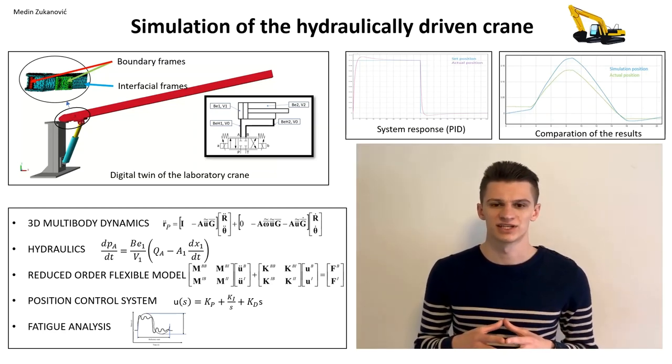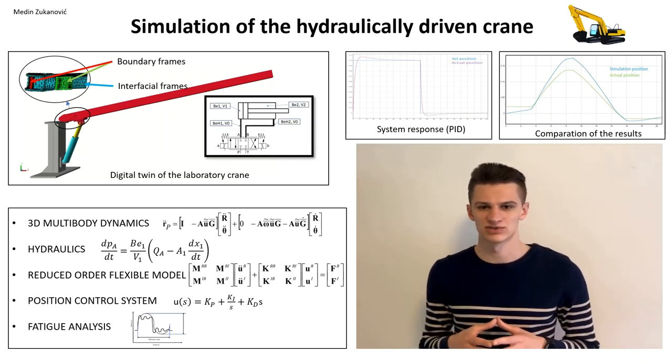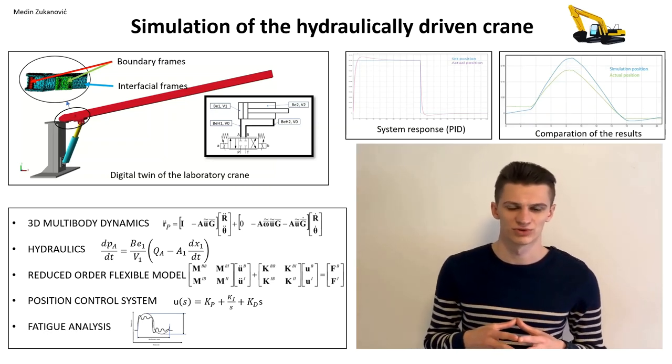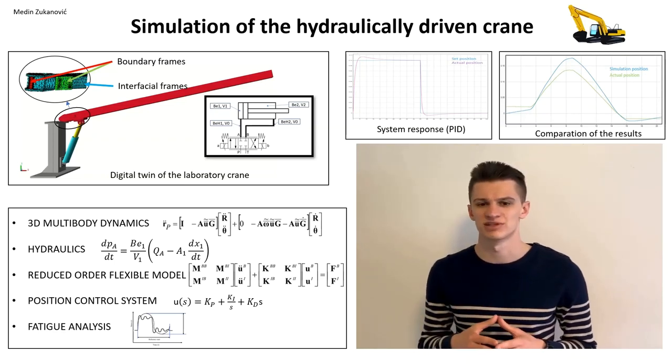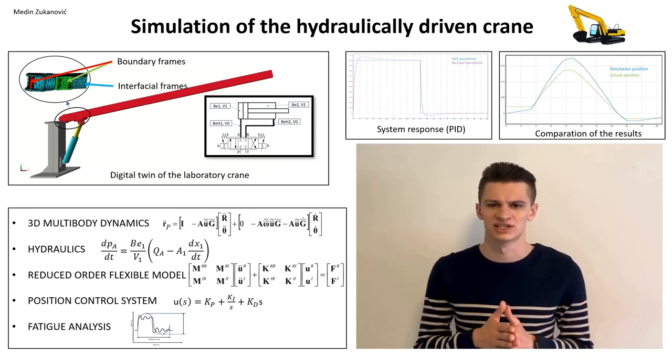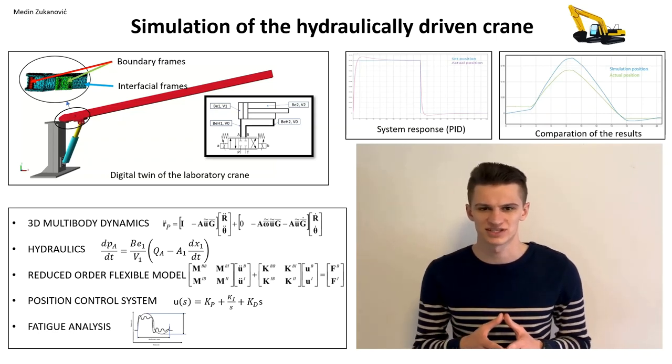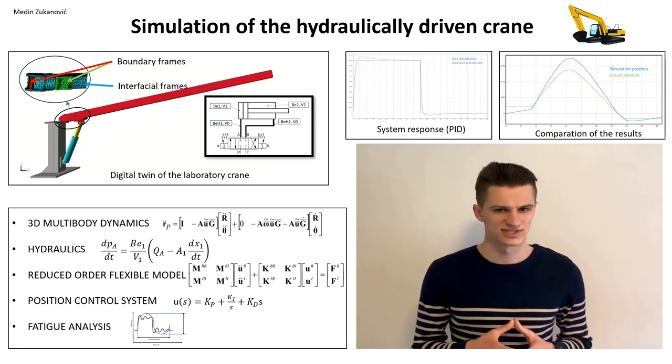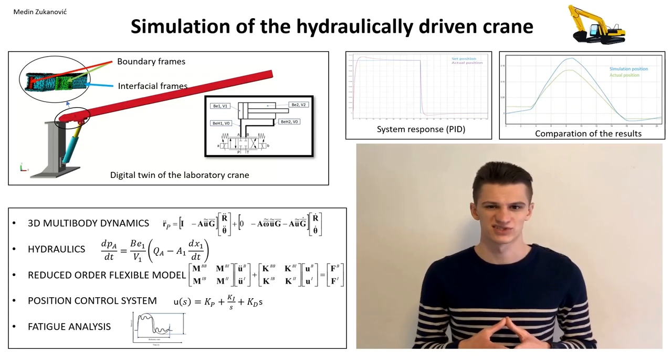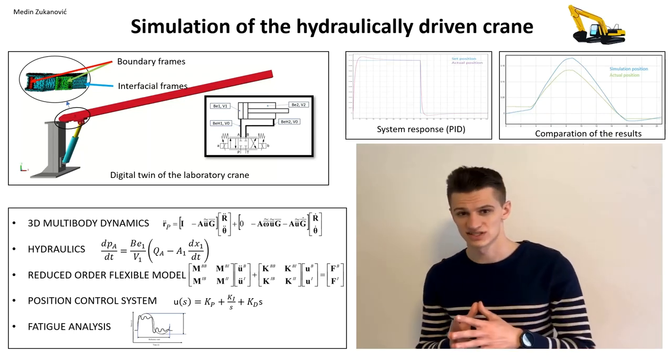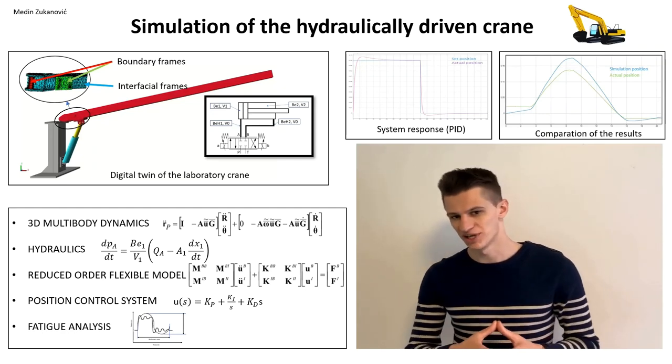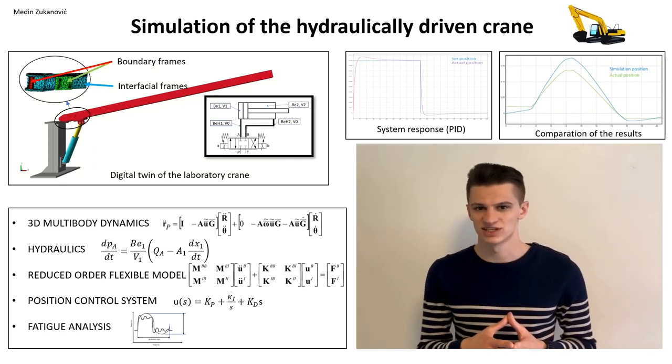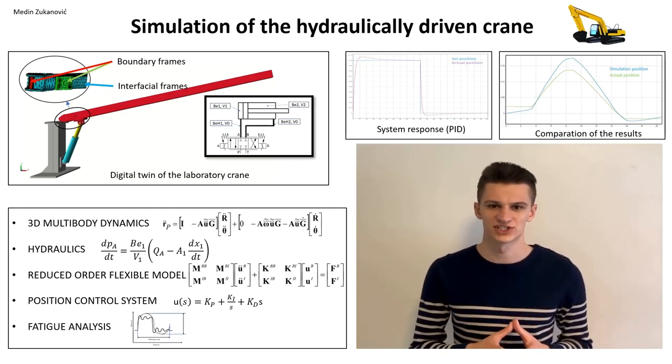So the Craig-Bampton method was utilized to single out the most significant deformation modes and to obtain a reduced order flexible model which contains all relevant information about the structural properties. This method allows both describing local deformations due to forces and joints using boundary Lego cubes, but also deformations within the structure using interfacial frames or interfacial Lego cubes.